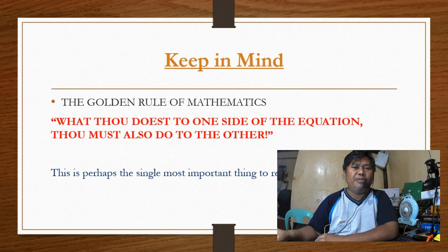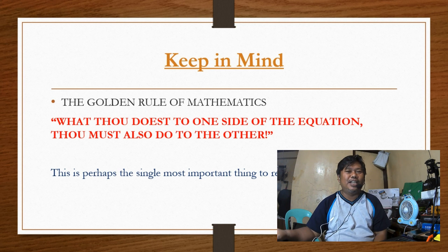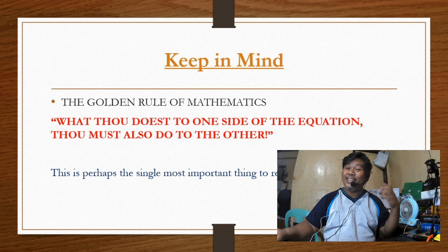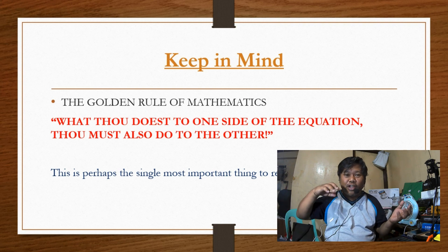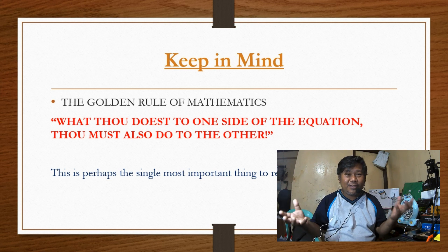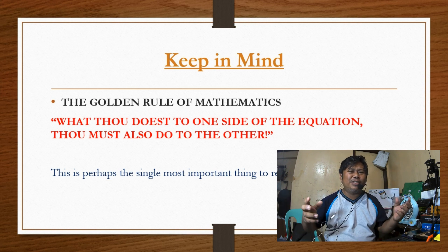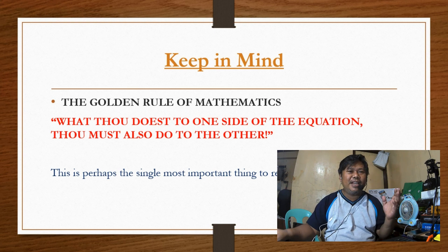Another famous saying in mathematics you have to keep in mind is what we call the golden rule of mathematics: what you do to one side of the equation, you must also do to the other side. There must be balance between the left and the right side of the equation. This is the single most important thing to remember.